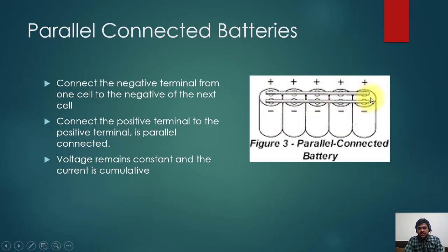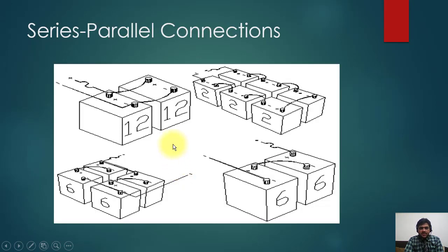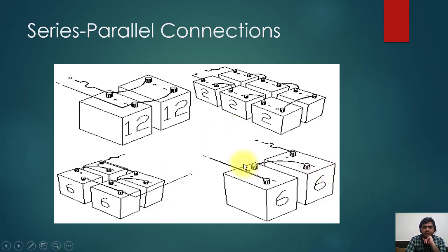The current remains the same as that of one cell. In parallel-connected batteries, all negatives are connected together and all positives are connected together. With a parallel connection, the voltage remains the same but the current capacity of the bank is the sum of the individual batteries. You can also have a series-parallel combination, where some batteries are in series and some in parallel. This way you increase both the voltage rating and the current rating together.